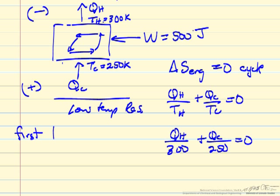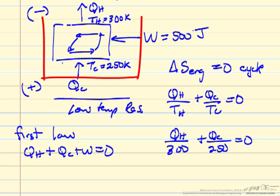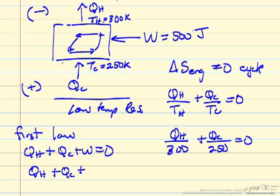We can also apply the first law to this system, which is just that QH plus QC plus W is zero. Just doing energy balance around this cycle, QH plus QC and then plus W, 500 joules is zero.